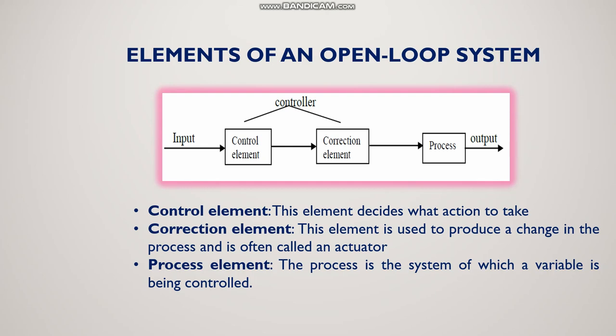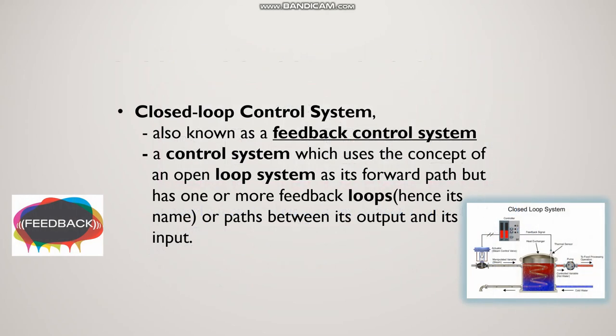The block diagram shows: input, control element, correction element, process, and output. Control element is who takes the decision to switch on and off. Correction element is used to produce a change in the process — sometimes called an actuator; it may be a switch, a motor, or a pedal. Process is the system in which a variable is being controlled. Then you get the output.